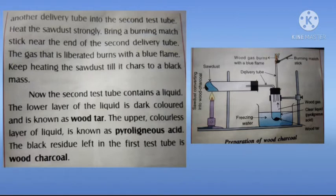The second test tube contains a liquid. The lower dark-colored layer is called wood tar, and the upper colorless layer is called pyroligneous acid. The black residue left in the first test tube is the wood charcoal.